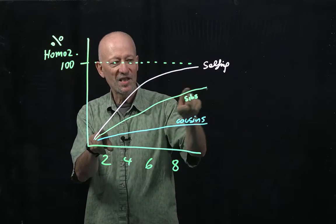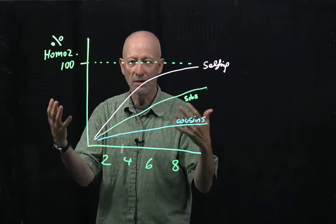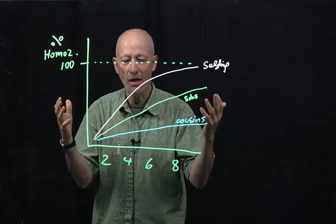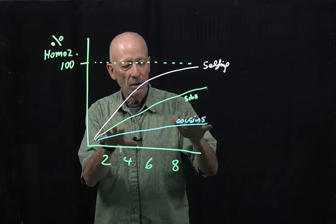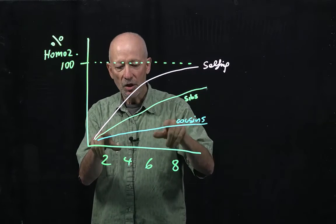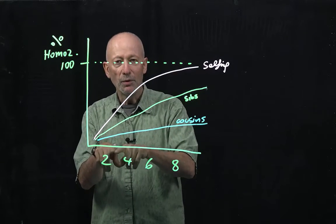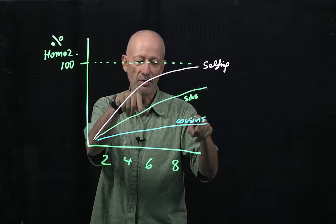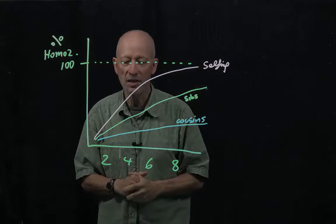This is the curve with sibs inbreeding which means that you mate brother and sister, typically done in breeding of dogs and horses and cows. In humans when cousin inbreeding is common, you find that the rate of approach to homozygosity is in fact much slower than with these other inbreeding techniques but it's still nevertheless measurable.